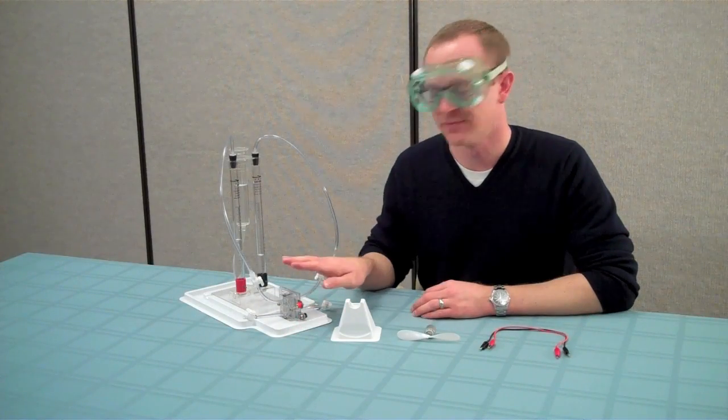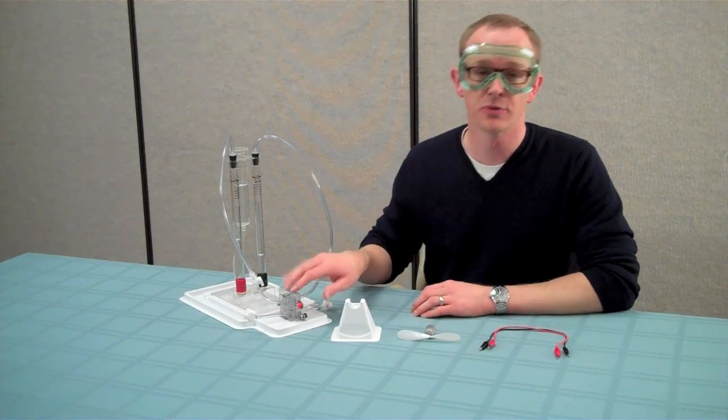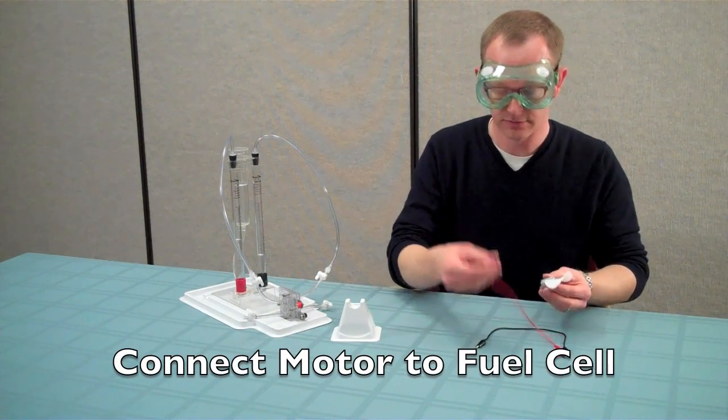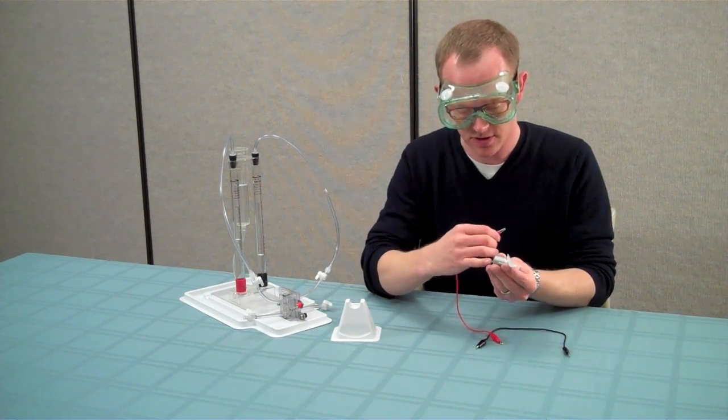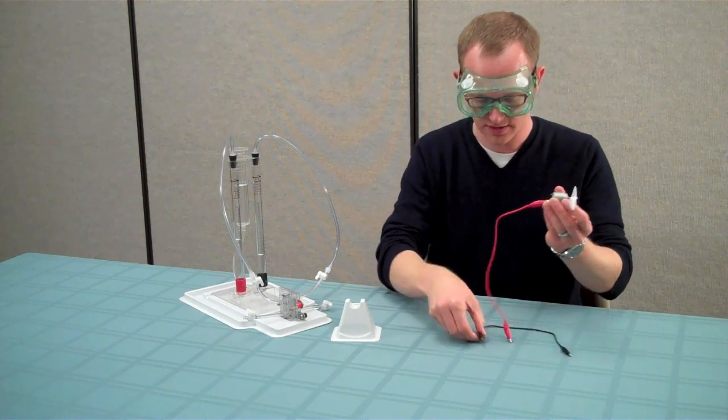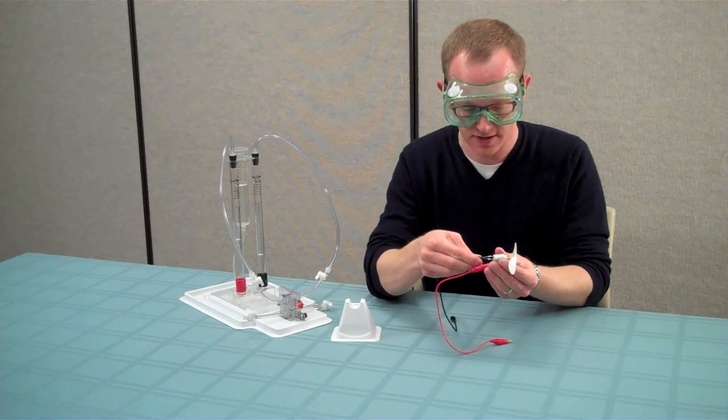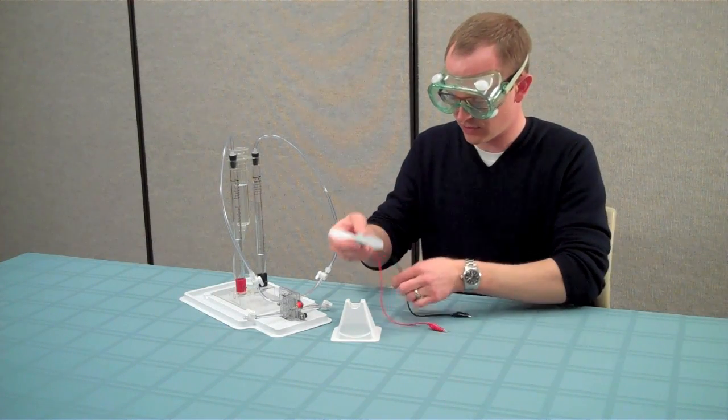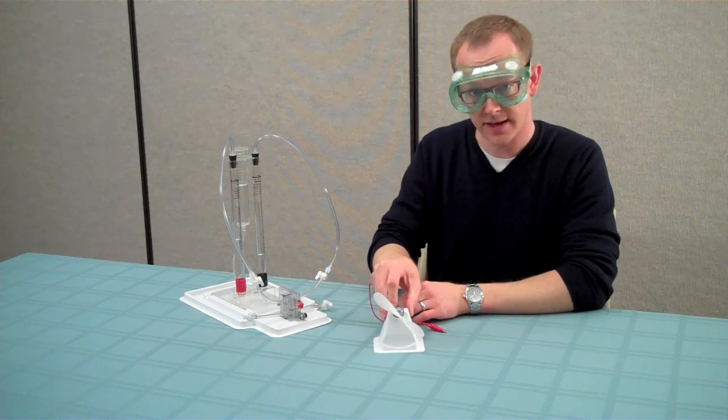Now that there is a high enough voltage across the fuel cell, we can put the fuel cell to work. Take the electric motor and connect the red wire to the electrode on the motor with the small plus symbol next to it. Then, take the black wire and connect it to the other electrode on the motor. Place the motor into the white plastic stand that came with your kit.